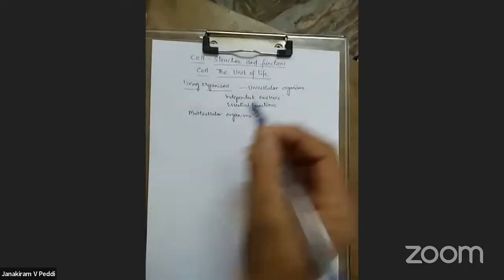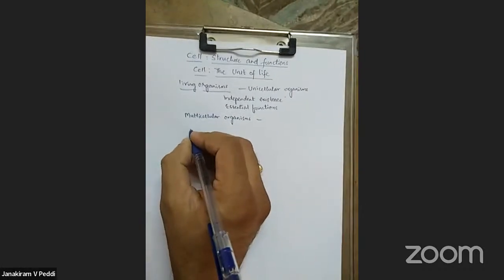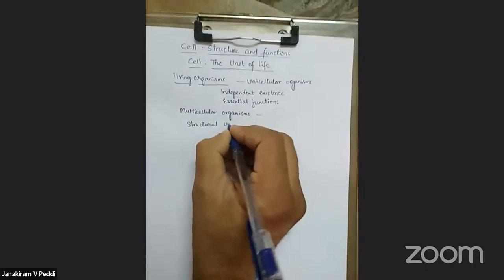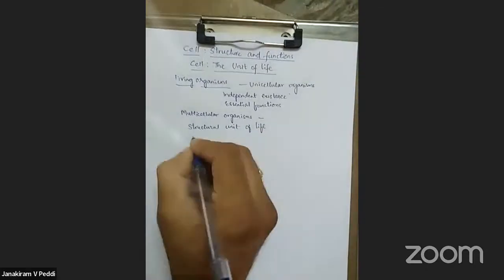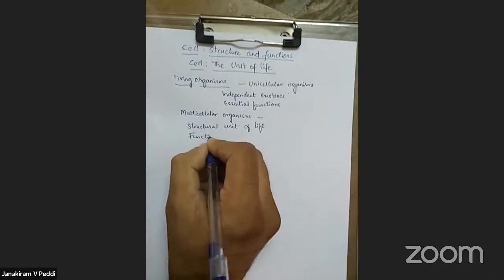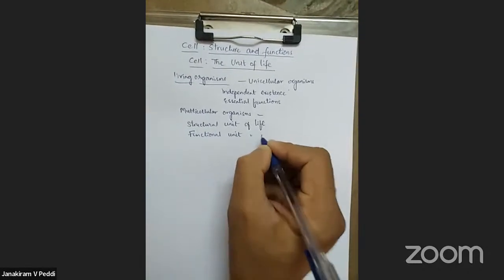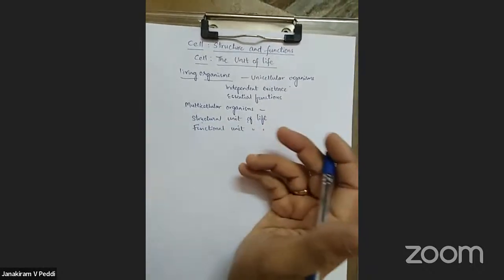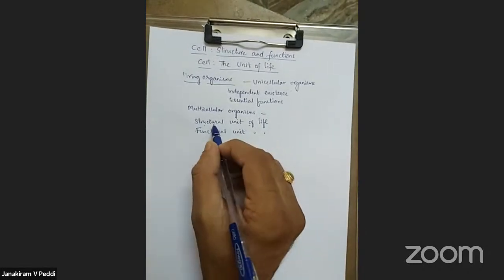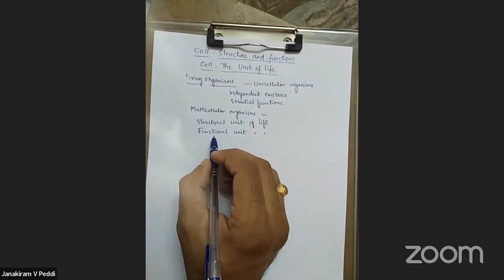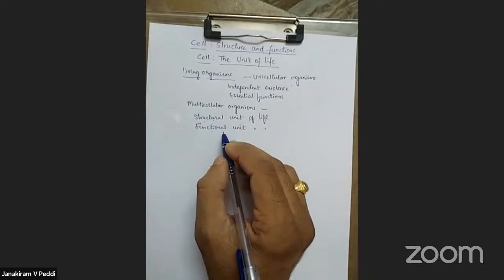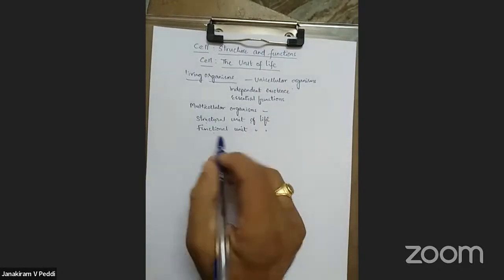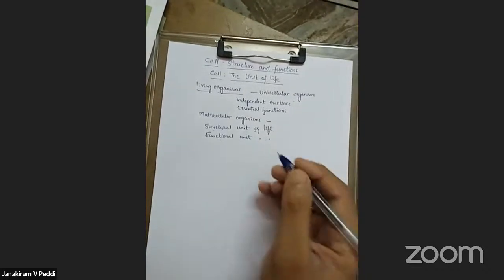Irrespective of whether they are unicellular or multicellular, every living organism is made up of cells. That is why we call the cell the structural and functional unit of life. 'Structural unit' means the structure of a living organism is due to cell organization. 'Functional unit' means every cell performs some type of function — when a plant performs photosynthesis, it is the cells that are doing so.